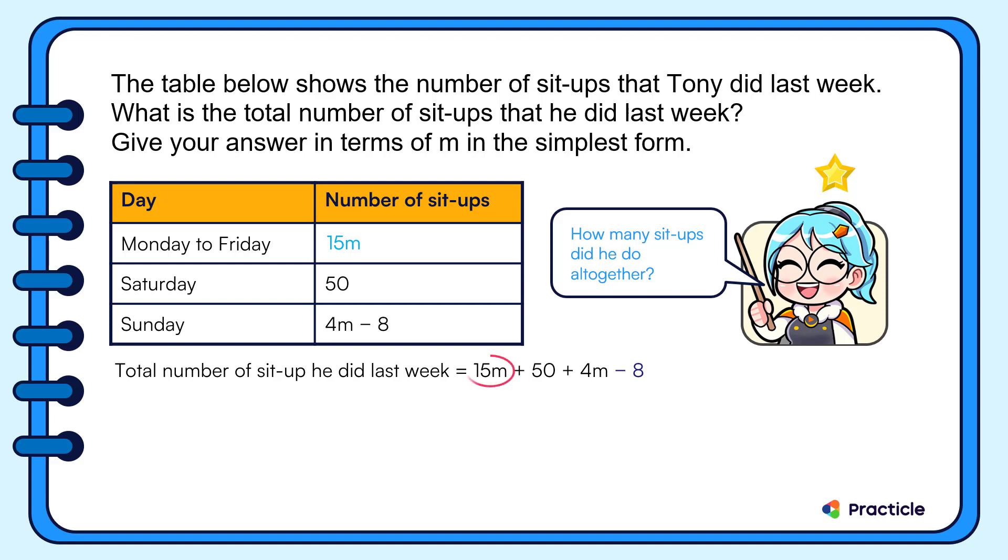Let's work with the terms first. 15M plus 4M is 19M. Then, what is 50 minus 8? Yes, 42.